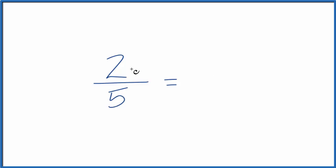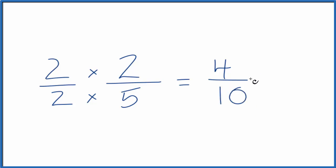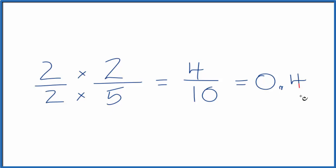If we multiplied two-fifths by one, it would still be two-fifths — it wouldn't change the value. So let's multiply it by two over two, because two divided by two is one. We're just multiplying by one. Two times two is four, and two times five is ten. So we have an equivalent fraction: four over ten.